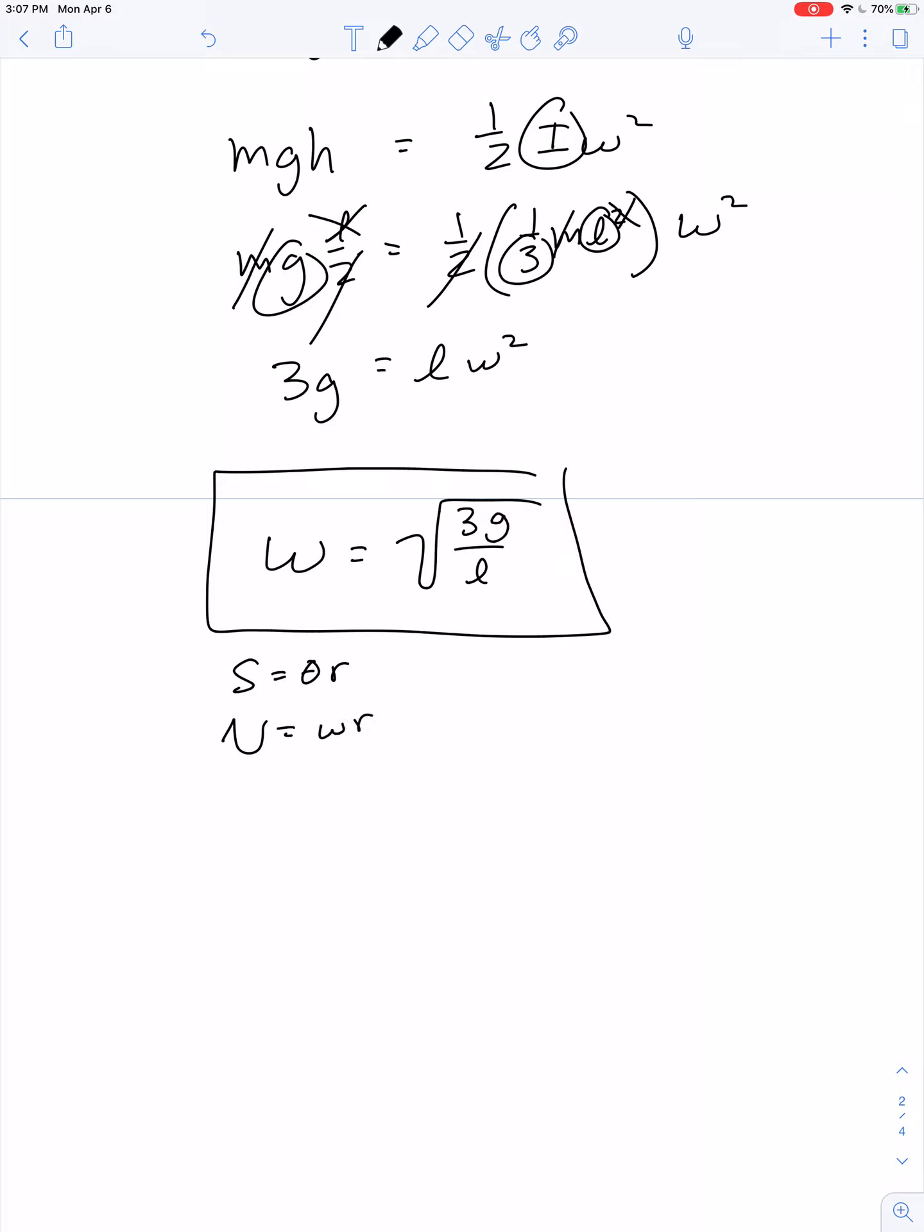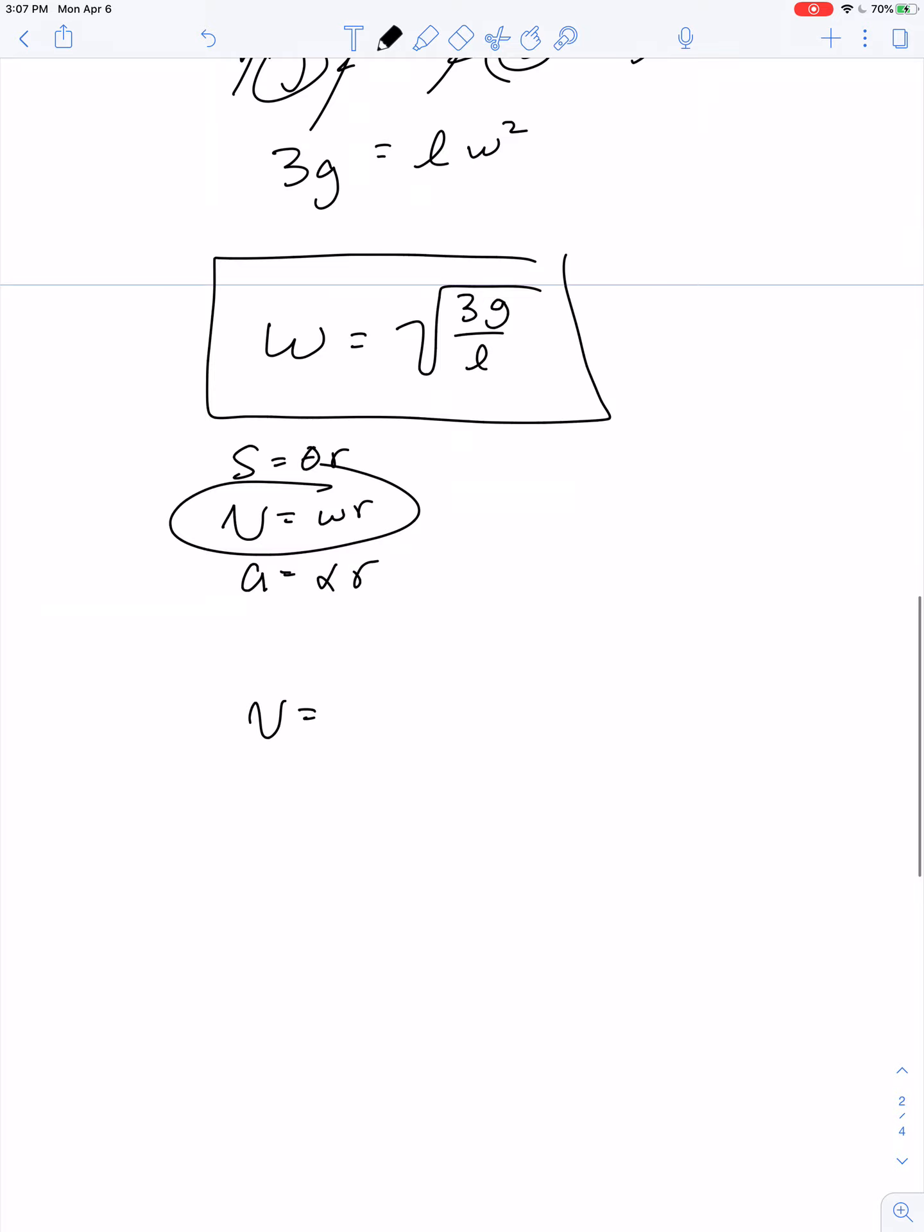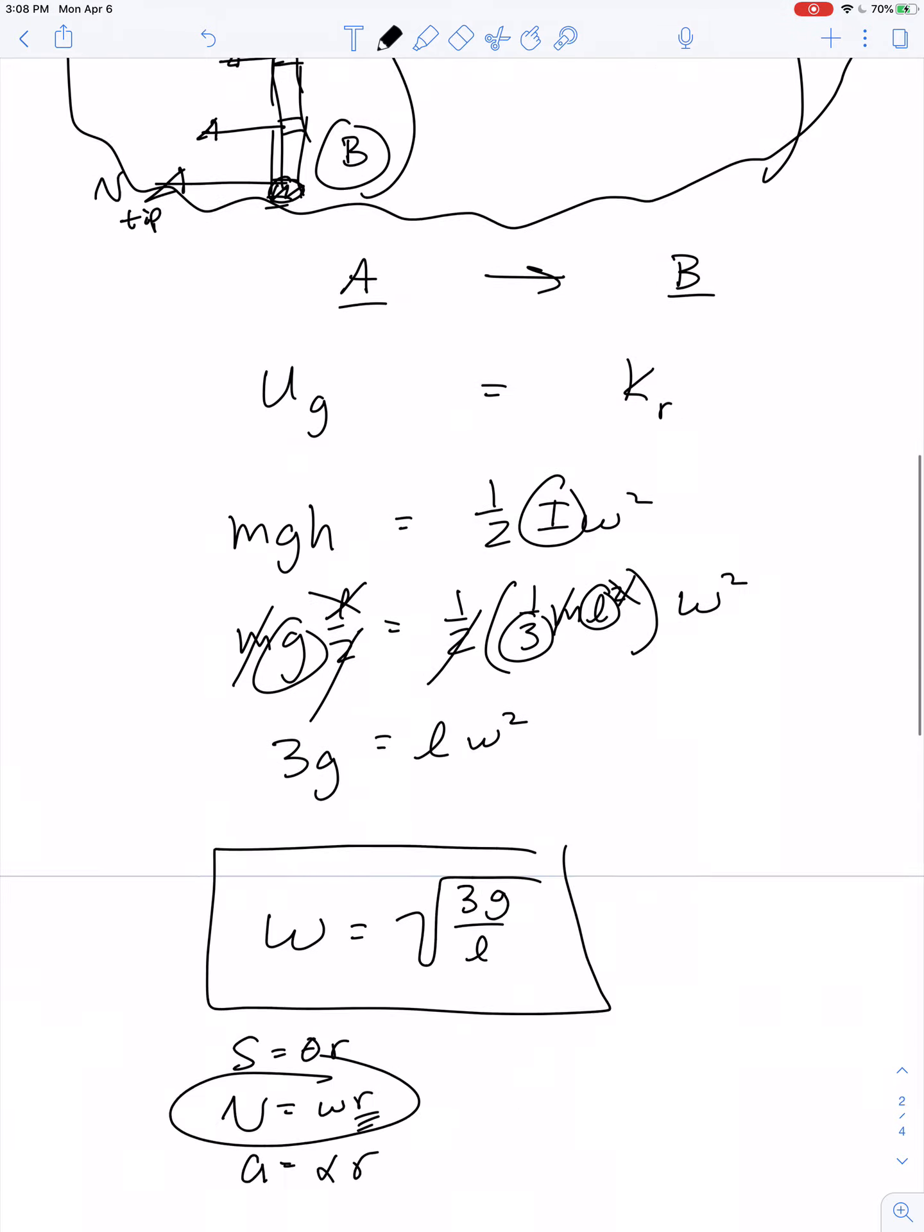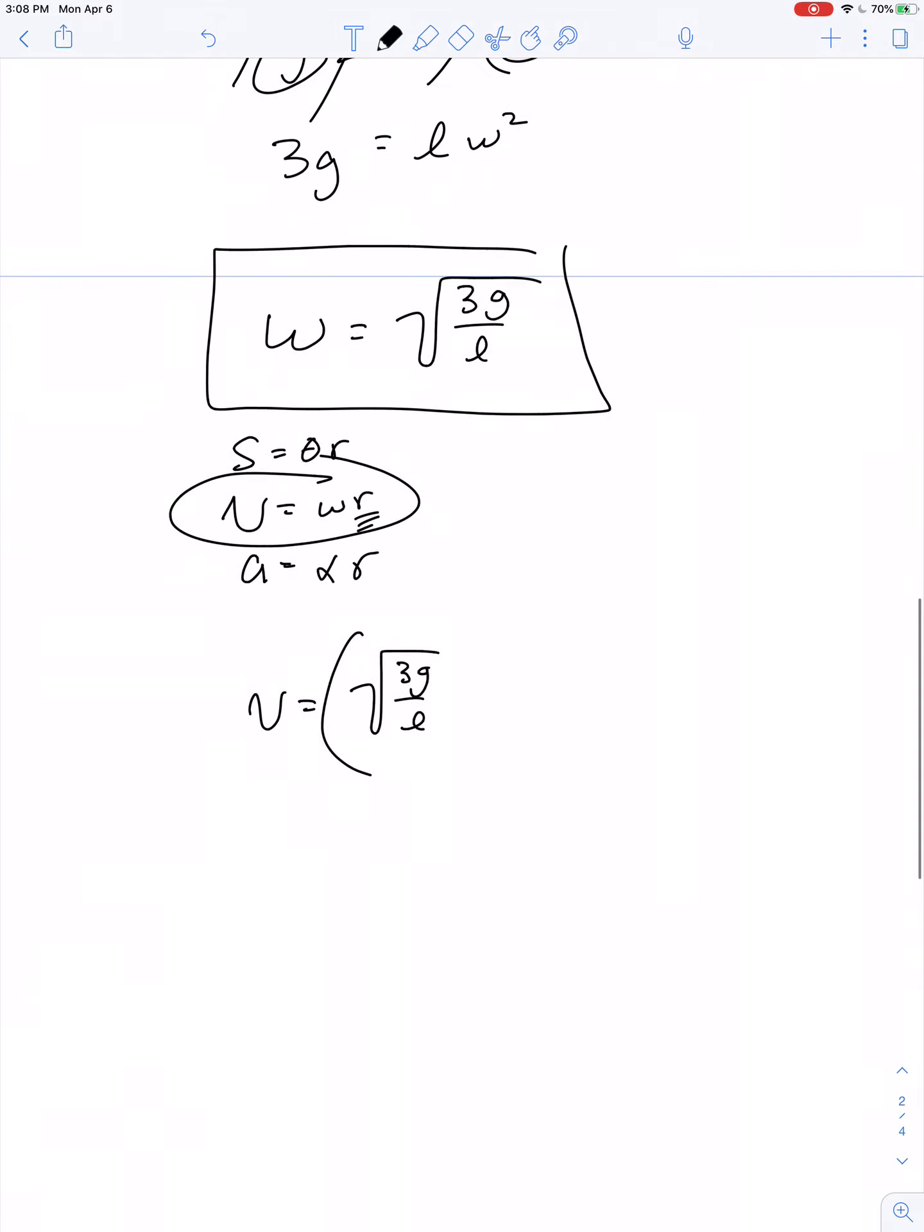If V equals omega times R, then V is equal to the square root of 3G over L times the full length of the beam. So the square root of 3G over L is omega, L is the value of R, and I can think of L as the square root of L squared.